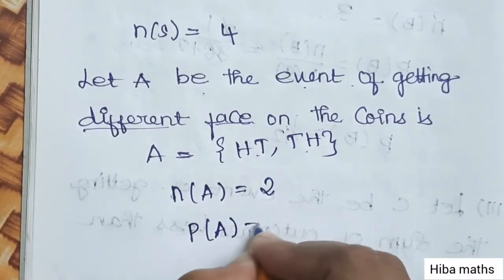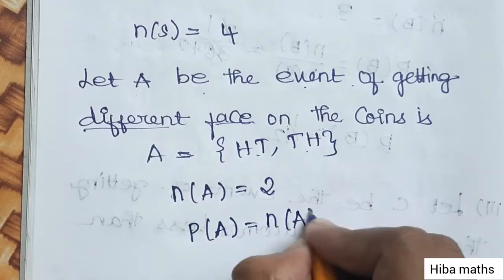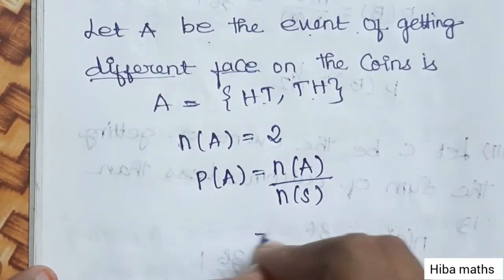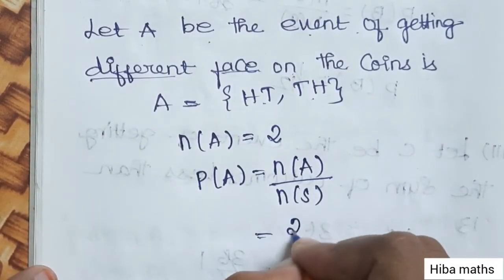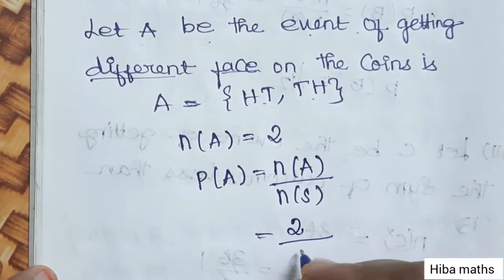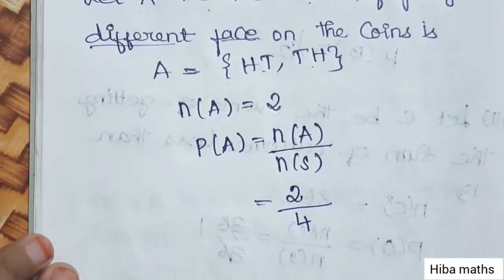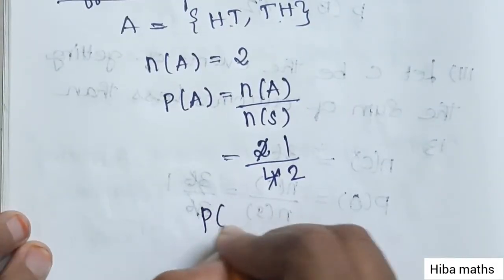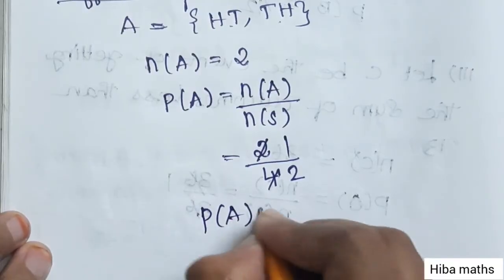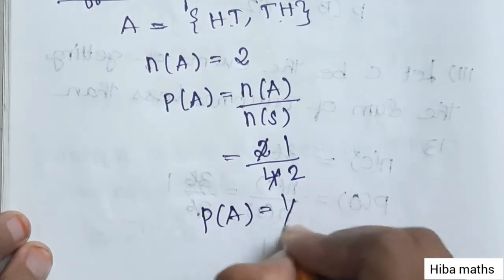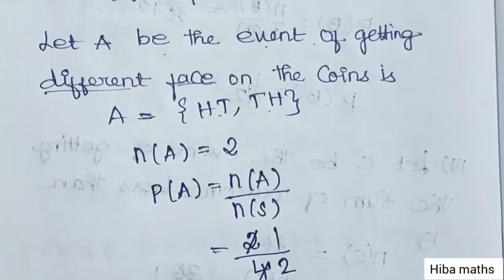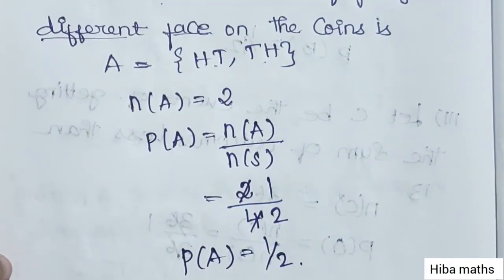P(A) = n(A) / n(S). n(A) is 2, n(S) is 4, which simplifies to 1/2. Therefore, the probability of getting different faces is 1 by 2. If you understand coin tossing problems, they are very easy. Thank you so much for watching.